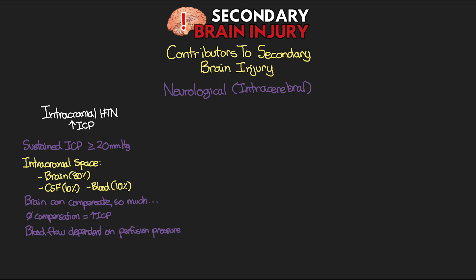A key takeaway is that blood flow is going to be dependent on cerebral perfusion pressure (CPP). We get this by taking our MAP and subtracting our ICP: CPP = MAP − ICP. We have a certain mean arterial pressure and a certain amount of pressure within the skull. In order for blood to move inside the skull, it has to fight against the intracranial pressure. Subtracting ICP from MAP leaves us with the perfusion pressure available to perfuse brain tissue. Normal CPP is typically 50 to 70 mmHg.